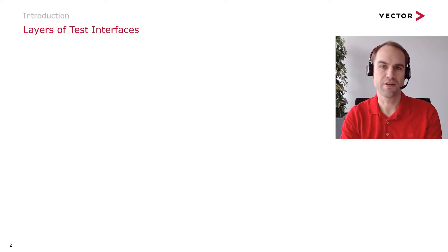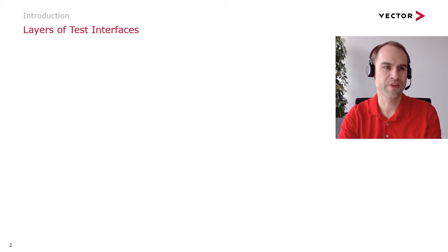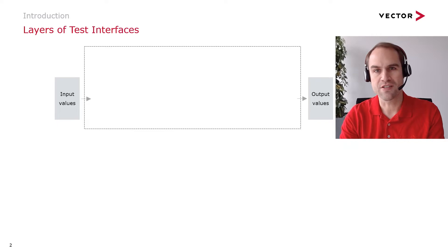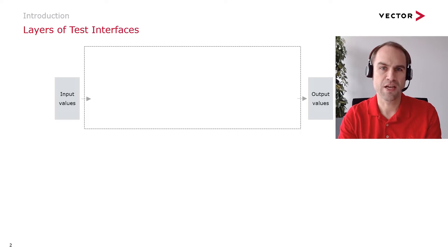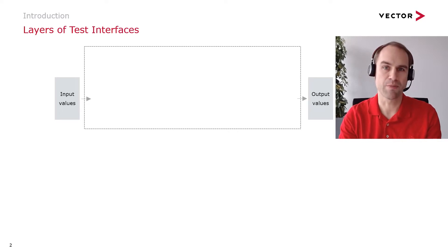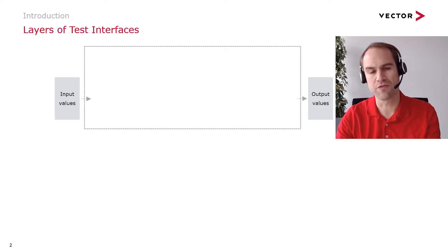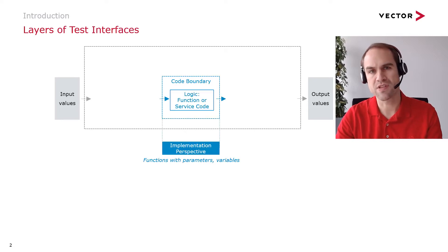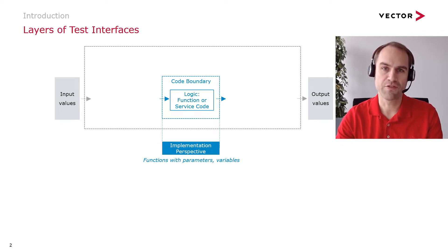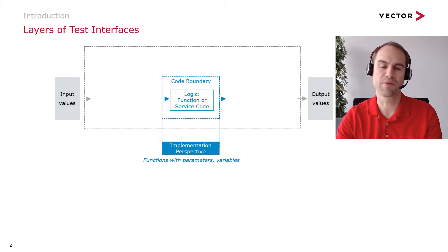I want to start this session with a slide that you should have seen earlier today in the presentation of my colleague Ute Katransky, where we can see the layers of test interfaces with regards to your system under test. Of course, if we think of our system under test we can think of it as a big black box that just receives some input values, processes them, and generates output values, but on the inside we have different levels where we can test. At the innermost level we have the code boundary — there we have the implementations of individual functions or objects, and since we have this in-depth knowledge about the implementation we test them typically with unit tests.